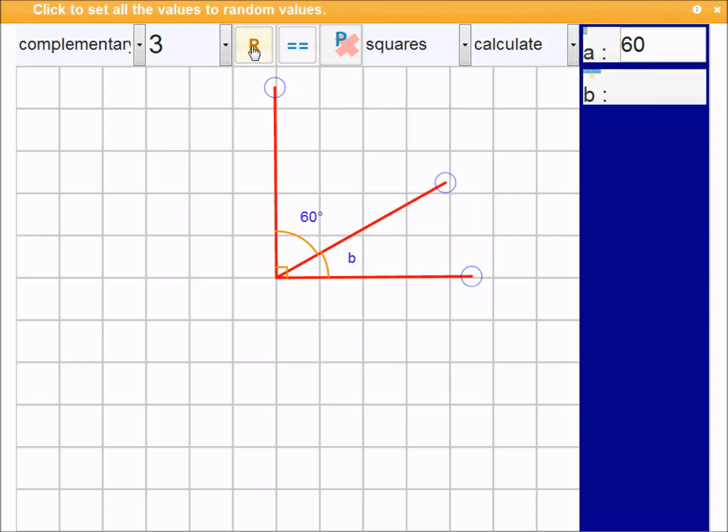If I click R again, we get another problem. 60 degrees, what's B? It must be 30. Click R again, and so on. You can make any kinds of problems like this.